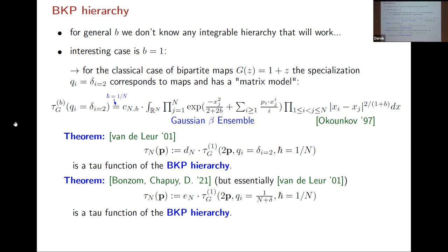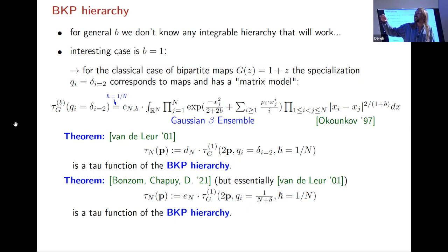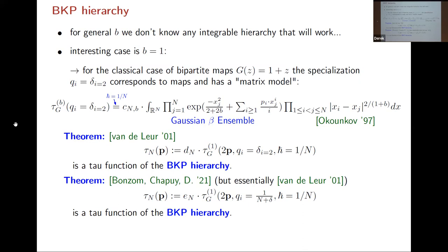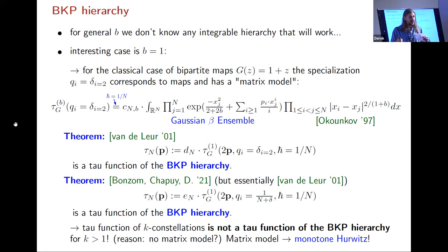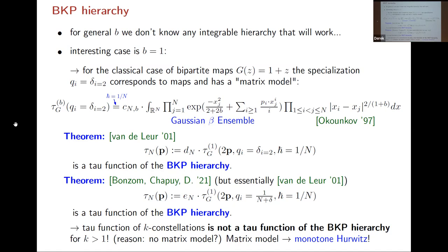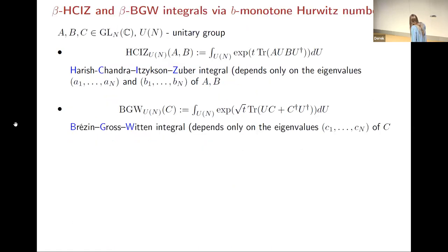Building on this, we proved that the generating function of bipartite maps on orientable or non-orientable surfaces is also a τ function of the BKP hierarchy. This essentially follows from van de Leur's work. Then for k>1, we checked and found that this is not a τ function of the BKP hierarchy, so the situation is completely different from the b=0 case where all weighted Hurwitz τ functions satisfy KP. Only very special cases have the BKP property.